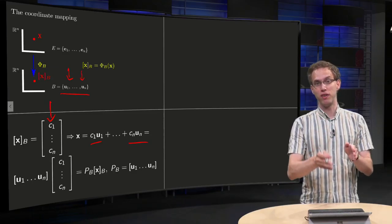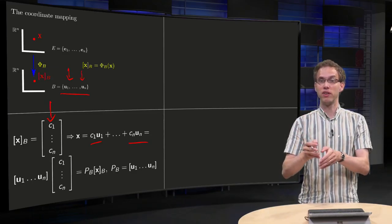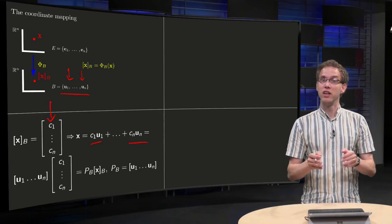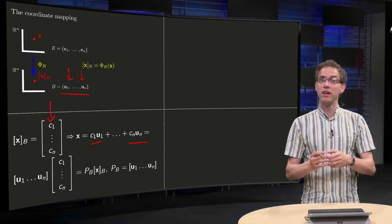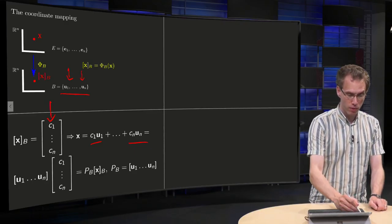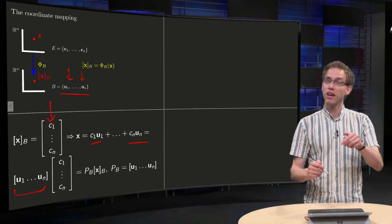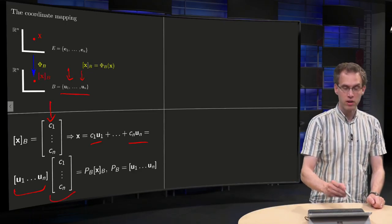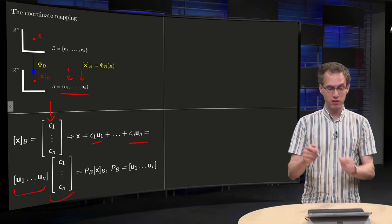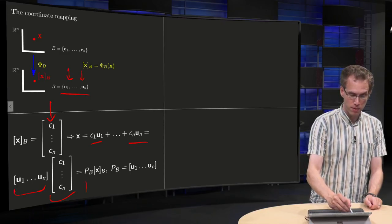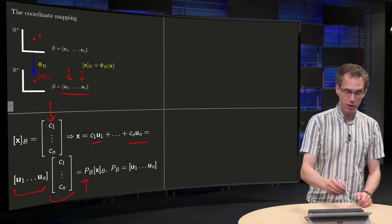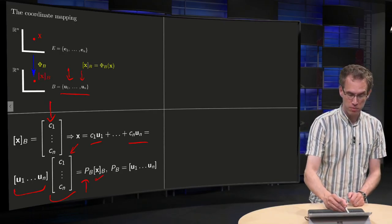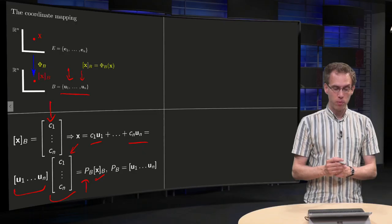And now we have scalar times vector plus scalar times vector plus scalar times vector, etc., where u1 up to un are just vectors in Rn. So we can write this as a matrix times a vector, where we put u1 up to un in the matrix, and we put the weights c1 up to cn in a vector. So now you have matrix times vector. We call this matrix PB, and on the right hand side we have our vector xB. So what do we see?